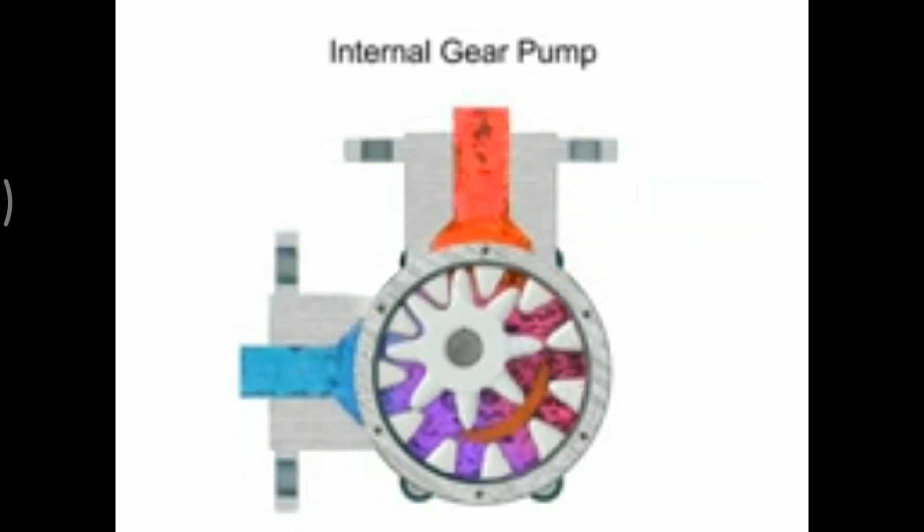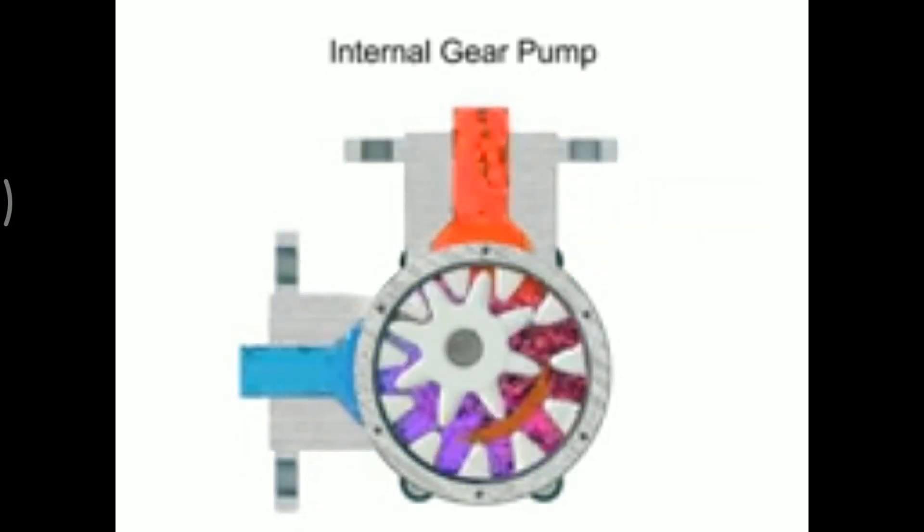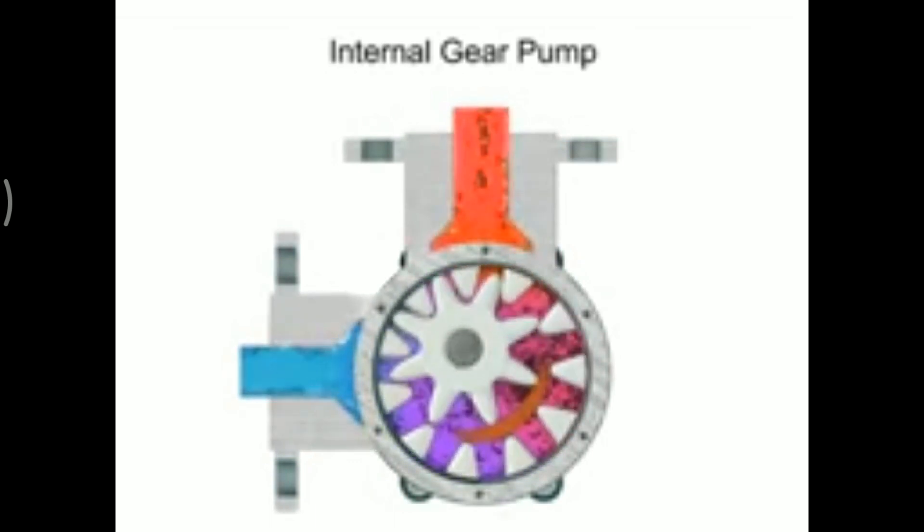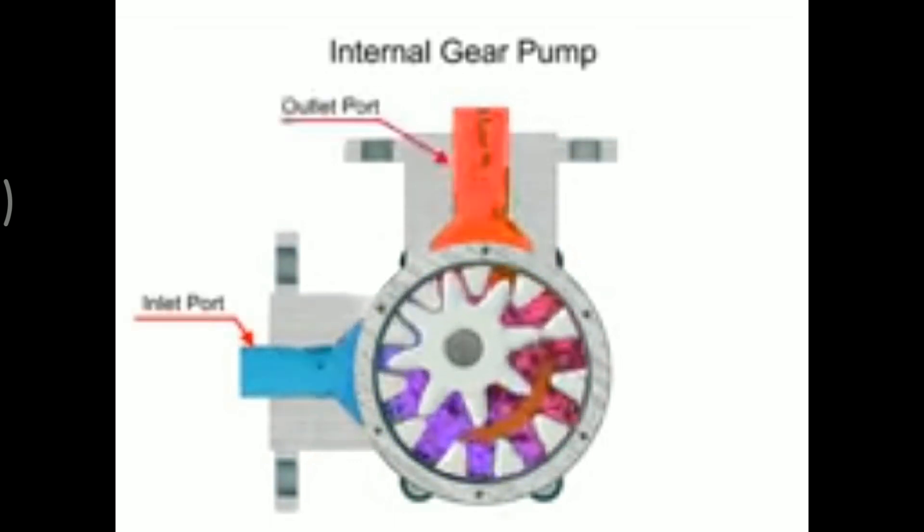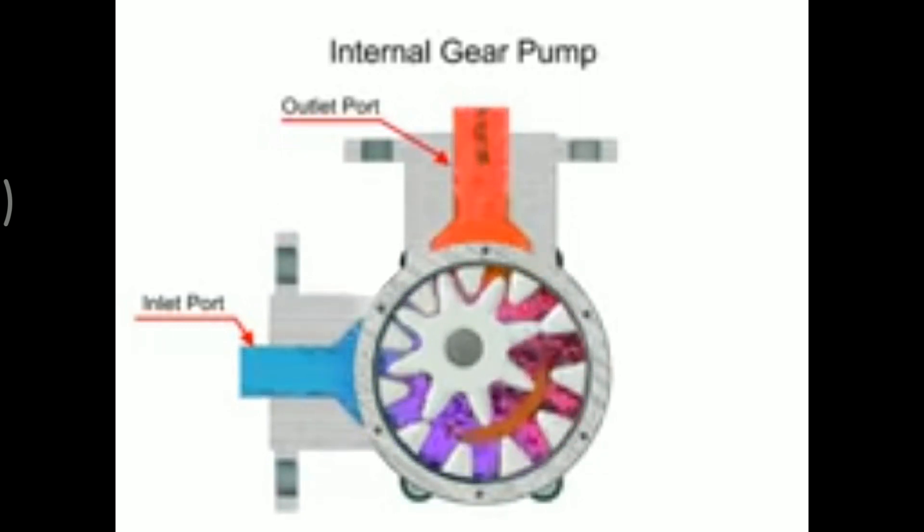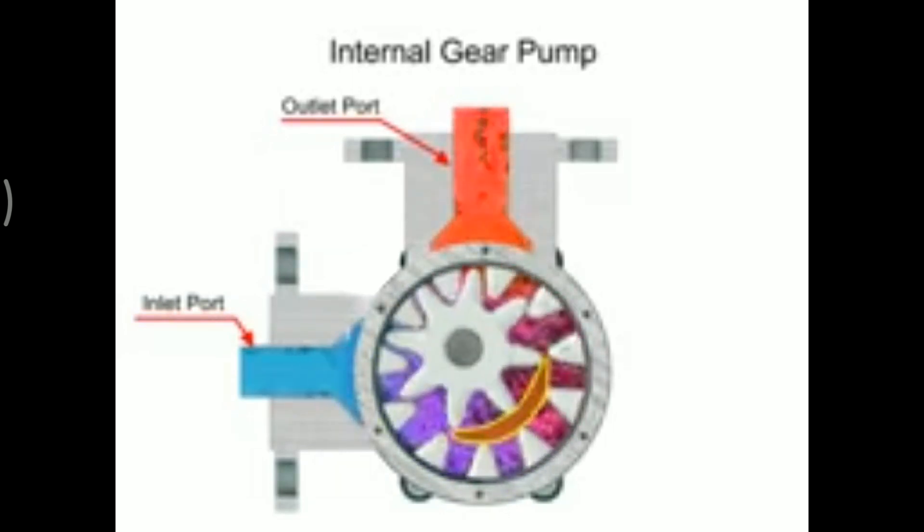As the inner gear rotates, it meshes with and moves the outer gear. Liquid is trapped in the gear spaces and carried from the inlet to the discharge. A stationary crescent-shaped divider separates the intake and discharge portions of the fluid.